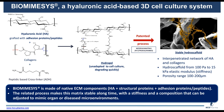If you cross-link these components, you get a hydrogel, but a simple hydrogel is unadapted to cell culture because it degrades quickly. Thanks to a patented process, all these components create stable hydroscaffolds — meaning we get an interpenetrated network of hyaluronic acid and collagen with an elastic modulus of stiffness between 1 and 15 kilopascals and a porosity between 100 and 200 micrometres. The patented process makes this matrix stable over a long time, with stiffness and composition that can be adjusted to mimic organ or disease microenvironments.